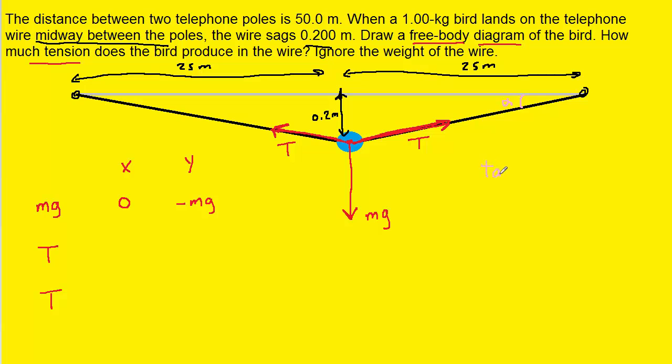We can see that the tangent of that angle, alpha, would equal the opposite side, which is 0.2, divided by the adjacent side, which is 25. You'll notice we're allowed to use the tangent because we actually do have a right triangle. We could even color in that right triangle so we can see it more clearly. Right here is the right triangle that we are examining, and we're using the tangent function to figure out this angle, alpha.